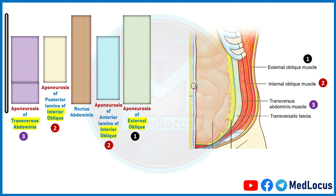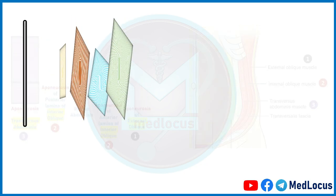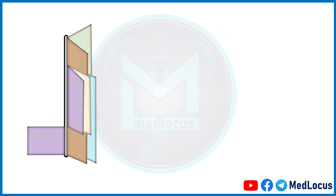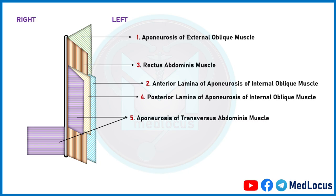Let us now arrange these muscles and reflect all the muscles and aponeuroses to the left side, so that we will be able to see how they are arranged in the anterior abdominal wall. The aponeuroses of the flat muscles of the anterior abdomen and rectus abdominis muscle are numbered from one to five in this picture according to their arrangement from anterior to posterior. Look at the picture carefully.